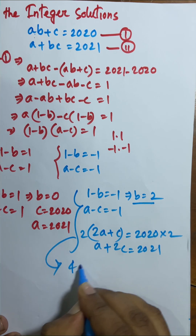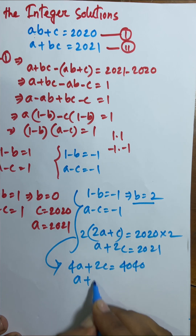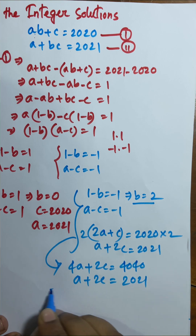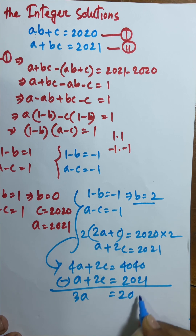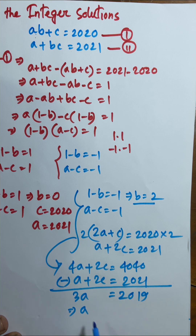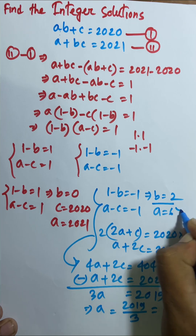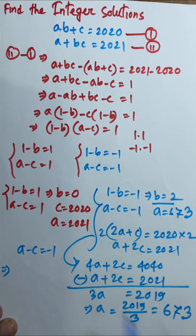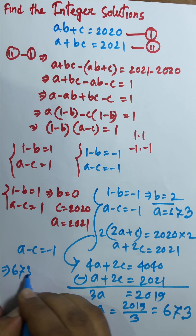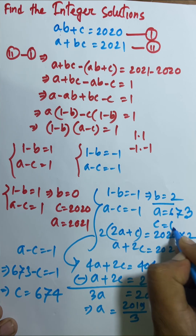So 2a plus ac equals 2020 and a plus 2c equals 2021. Multiplying the second by 2 gives 2a plus 4c equals 4042. Subtracting: 4a plus 2c equals 4040, and a plus 2c equals 2021. Subtracting: 3a equals 2019, so a equals 673. Since a minus c equals negative 1, c equals 674.